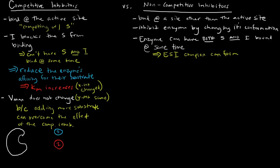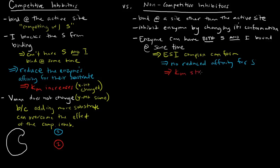Since the enzyme, substrate, and inhibitor can all bind at the same time, there's no reduced affinity for the substrate. This means the Km stays the same, and we shouldn't see a difference in the x-intercept. The x-intercept should be the same.